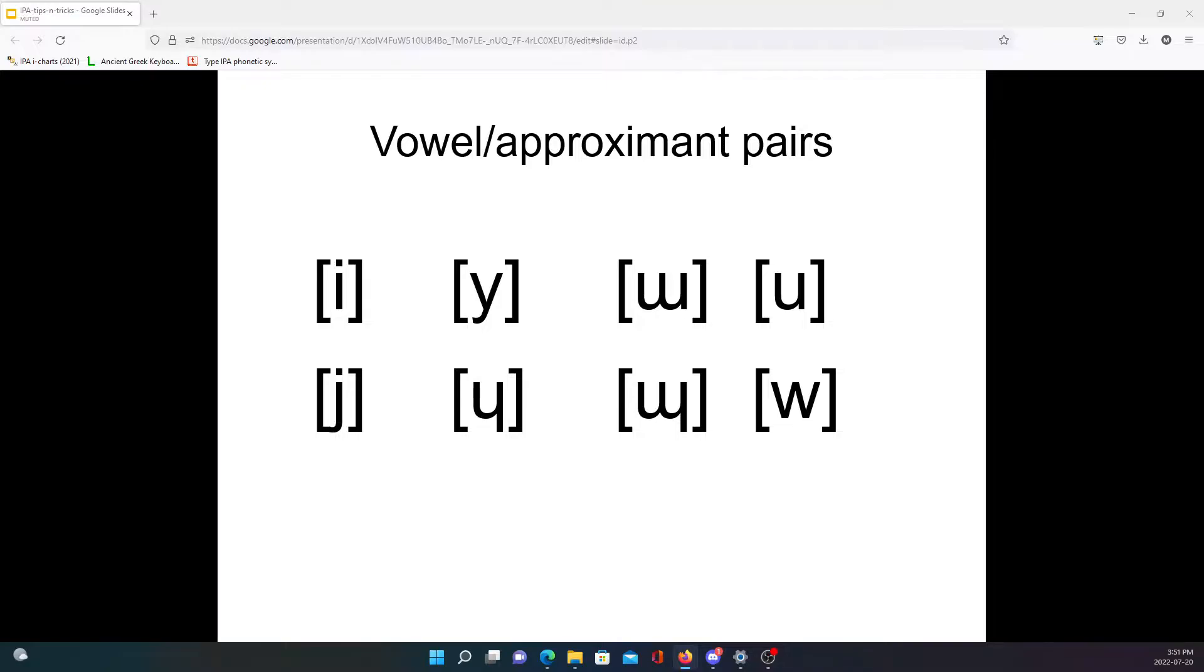Approximants being the least constricted, so they're right next door to being vowels. So for example, for the close front one we have the lowercase i, a close front unrounded vowel, and that's very close to a palatal approximant.